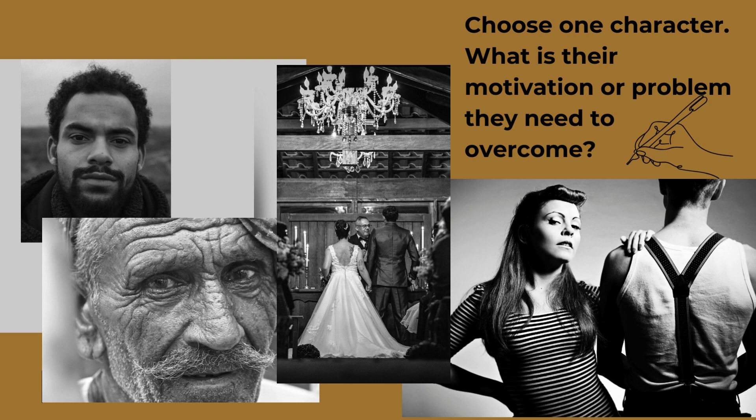Choose a character — one of these characters — and they're going to be a character in your story. Who are you drawn to the most and why? Pause the video and spend a couple of minutes writing down any ideas about this person. Who are they? What do they do for a living? Where are they? What's happening right now? And do they have a problem? What is their problem? Or what is their motivation? Your character needs to have a core motivation driving them, or a core problem they need to overcome. Choose one person and one motivation, and jot down anything you can about them.